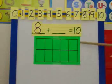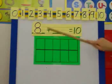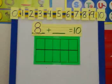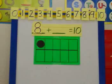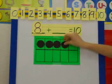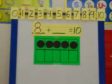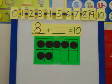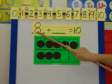So my tens frame is going to help me figure out what numbers I use to make this full 10. So I've just chosen 8. I'm going to put 8 dots in my tens frame. 1, 2, 3, 4, 5, 6, 7, 8. So I used 8 black dots to show the number 8.